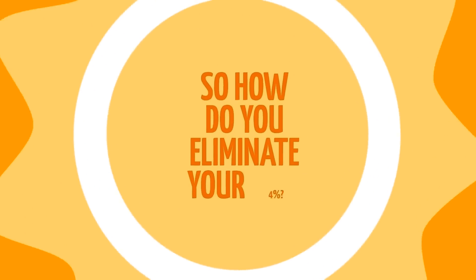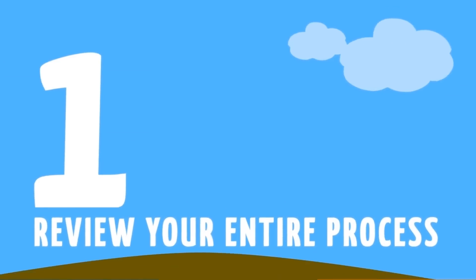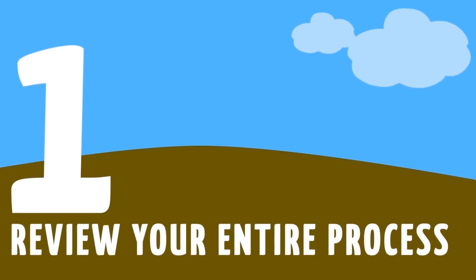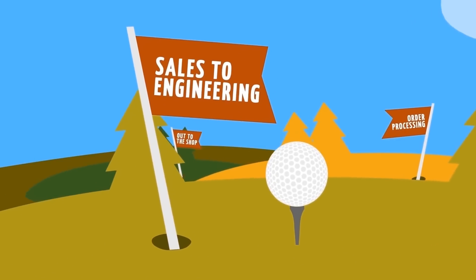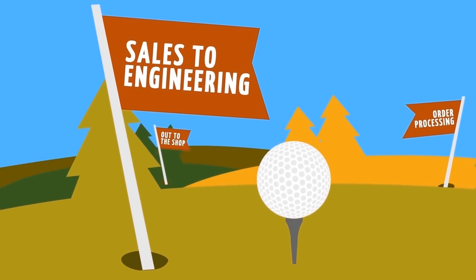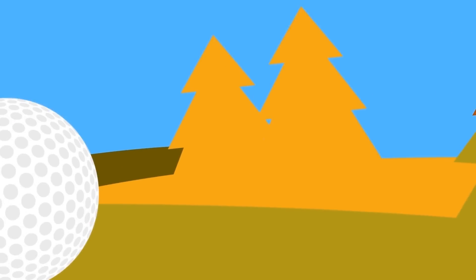So how do you eliminate your 4%? Here is an easy 3-step process. Number 1: Review your entire process. If you want to make meaningful changes, you need to measure and evaluate all the steps in the entire process—from sales to engineering, to order processing, and out to the shop.